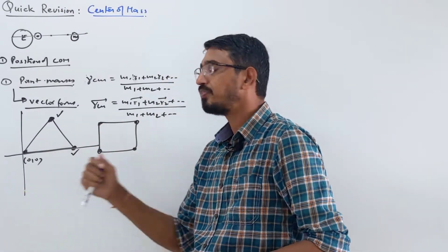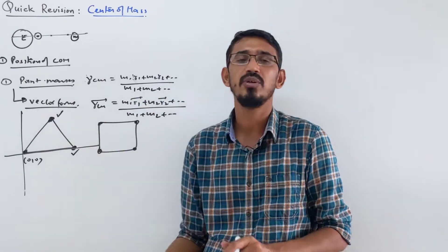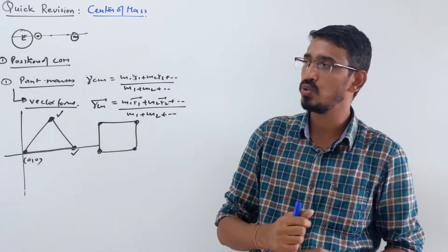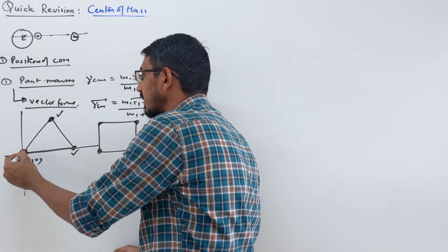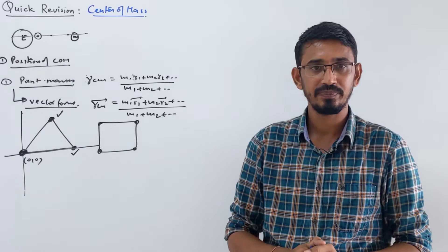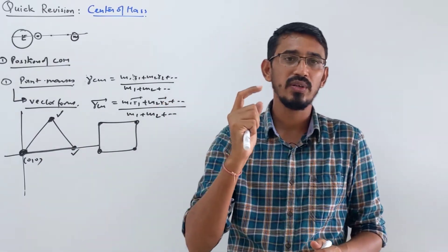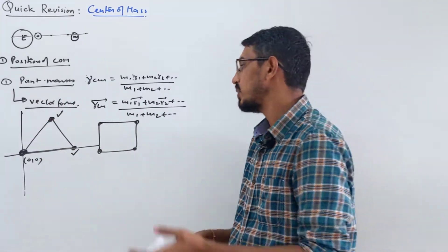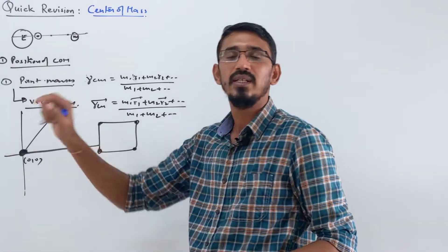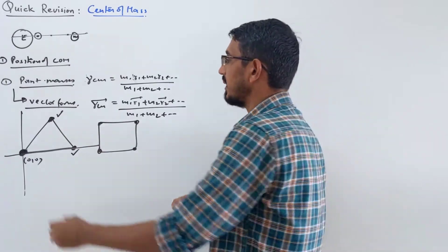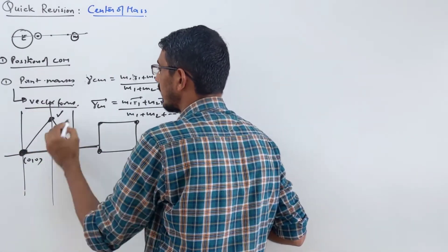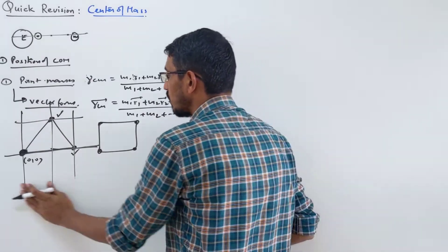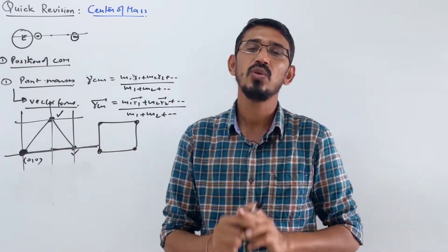An important property is that the position of the center of mass is not affected by your choice of coordinate system — you can choose it anywhere. But we always try to choose the coordinate system such that at least one mass is placed at the origin itself, so that calculations become easier. Wherever you choose the coordinate system, your answer for the position of the center of mass will be the same.